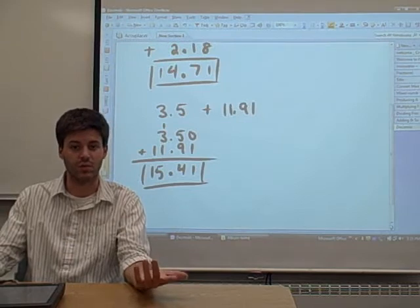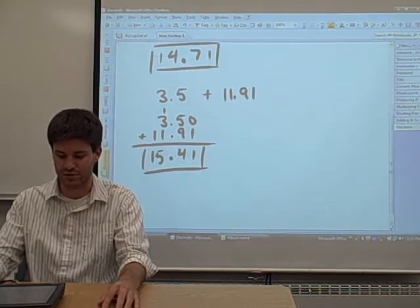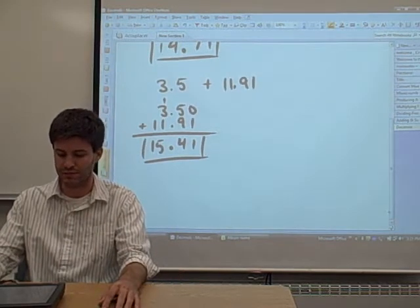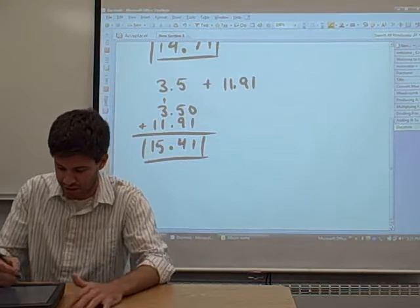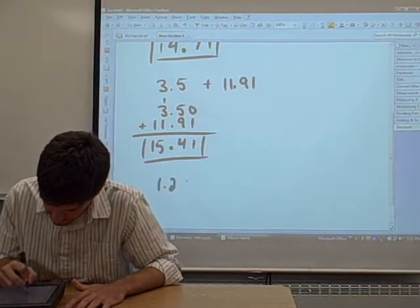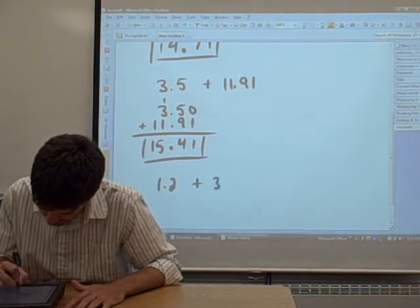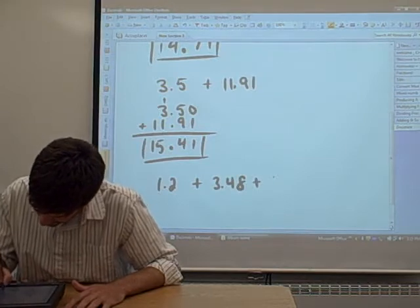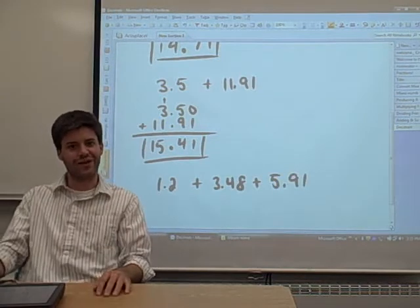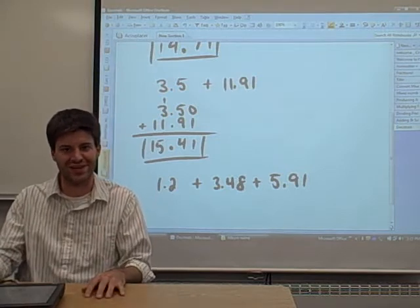This could, of course, be done with more than two numbers. For example, and why don't you give it a shot too. 1.2 plus 3.48 plus 5.91. Why don't you try to add all three of those together. See if you can do it. It's a challenge.